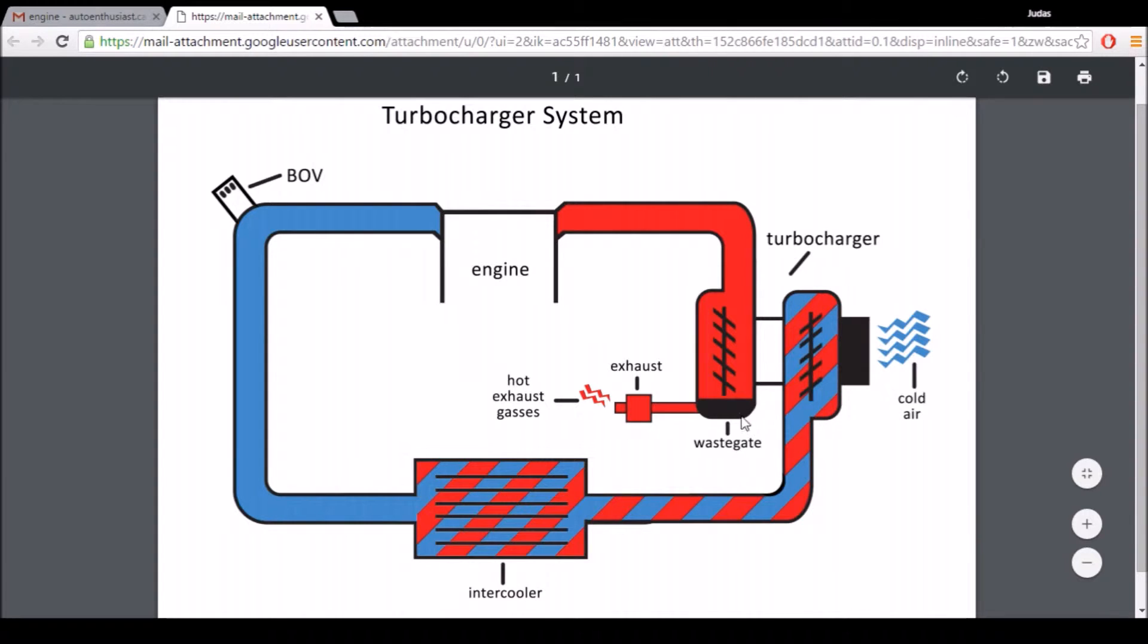So the wastegate is going to open up, releasing all these exhaust gases down into the exhaust piping and out the exhaust. Overall, the wastegate's purpose is to inhibit any additional boost that the exhaust gases are creating.